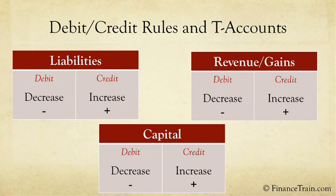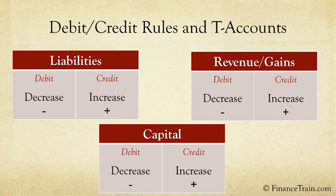Similarly, for liabilities, capital, and revenue or gain accounts, an increase is credited and a decrease is debited. Remember that each transaction affects two or more accounts, and one T-account represents one account. In the following screens, we will look at the transactions at Web Design Inc. and see how they are recorded in the T-accounts.